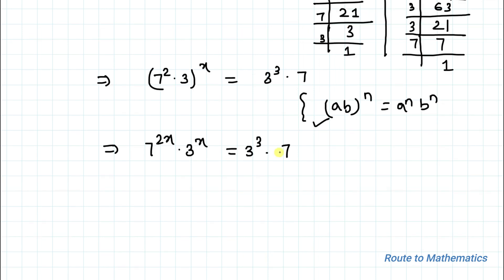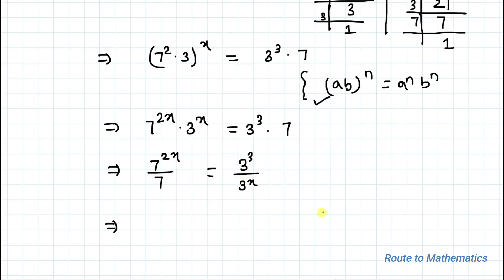Now by cross multiplication, let's take all the same bases to one side. So we have 7 to the power 2x divided by 7 equals 3 to the power 3 divided by 3 to the power x. In the next step we will apply the exponential rule: a to the power m divided by a to the power n equals a to the power m minus n.